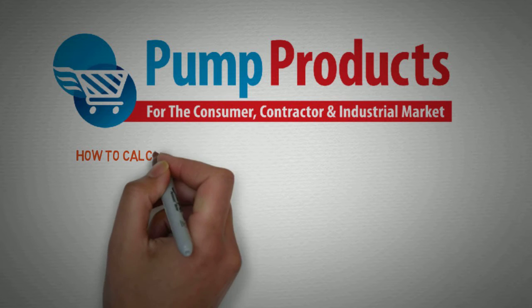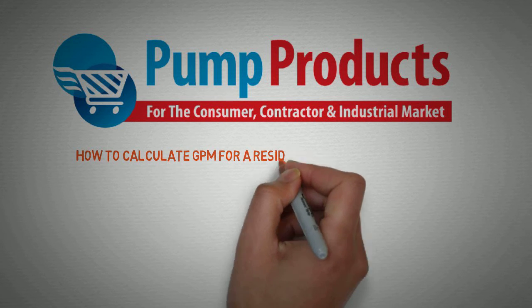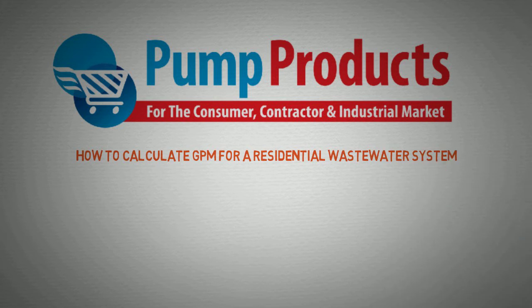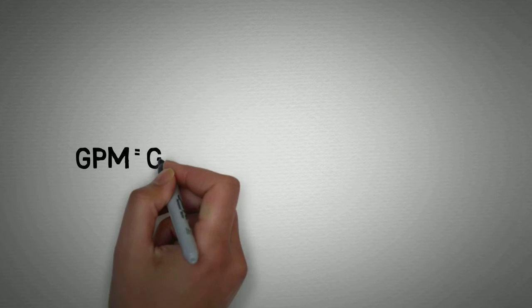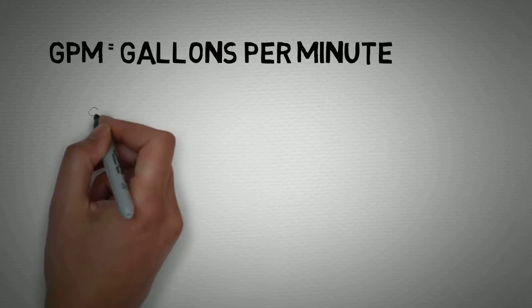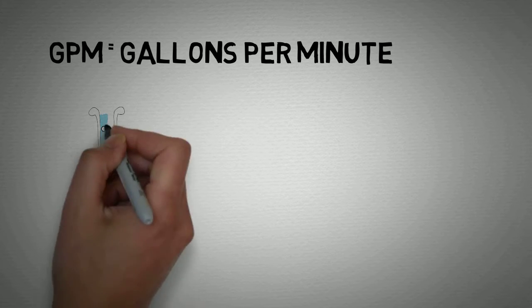In this video, I'll be showing you how to calculate GPM for a residential wastewater system. GPM stands for gallons per minute and is used to measure water flow, which is the amount of water moving past a given point.